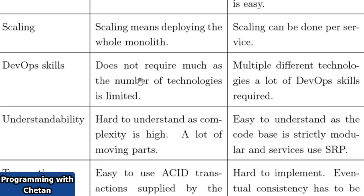Regarding DevOps skills: in monolithic, since technologies are limited, knowing a few technologies is sufficient. In microservices, since different services may use different technologies, you need DevOps skills across different technologies. Nowadays DevOps is widely used, and from a learning perspective it is also beneficial. Regarding understandability: in monolithic, it is very hard to understand the application because it is very complex. In microservices, it is easy to understand because the codebase is specific to each module.